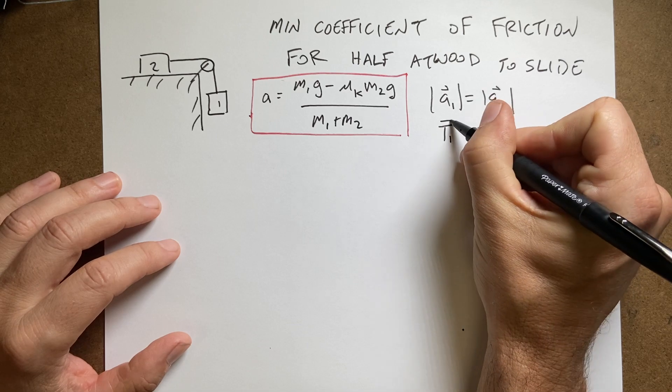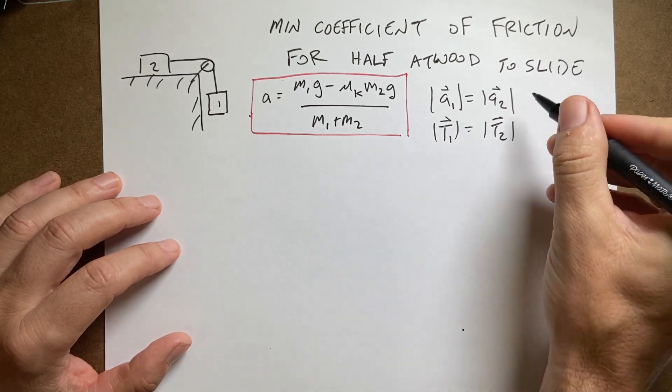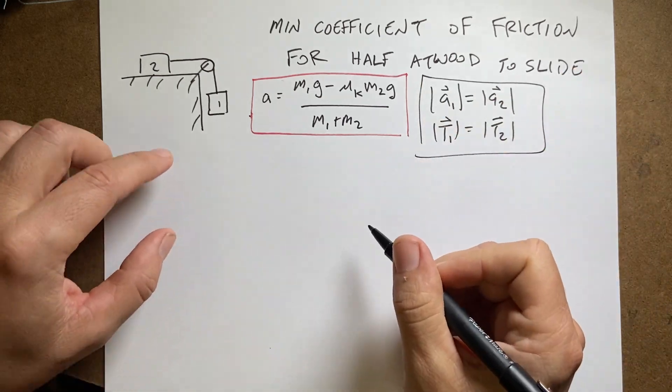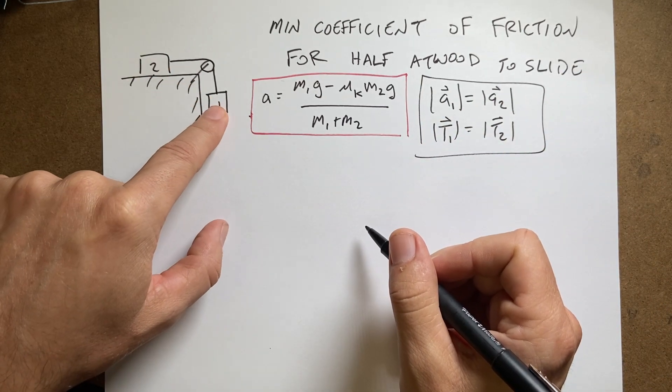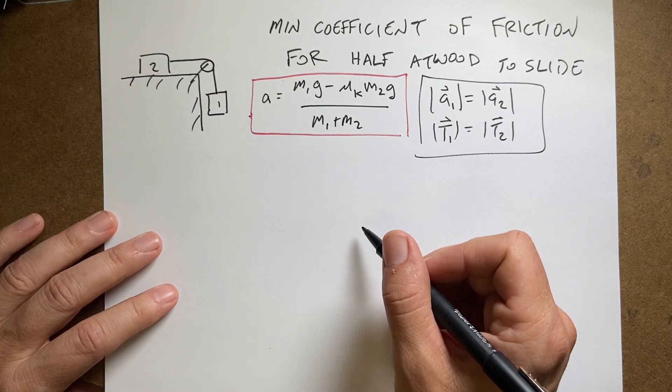The other thing is T1 magnitude equals T2 magnitude. These are the two key things for Atwood's machine. So the tension pulling on this, the magnitude of that tension force is the same as the tension pulling on this one.